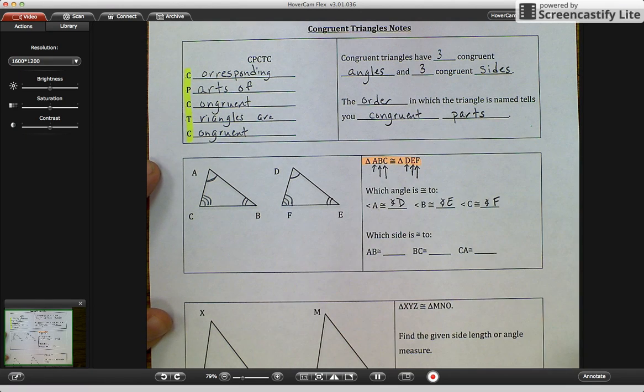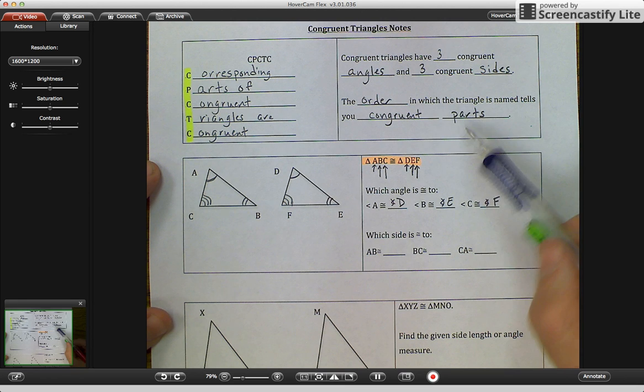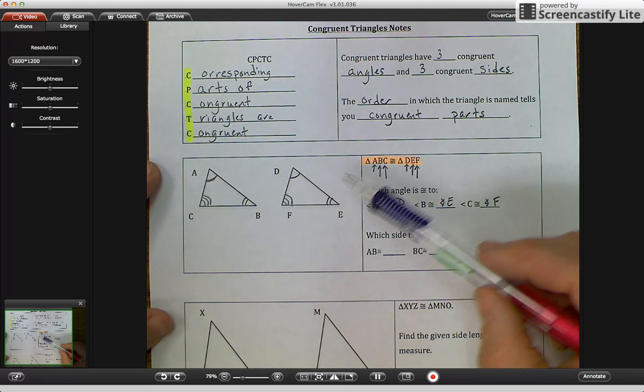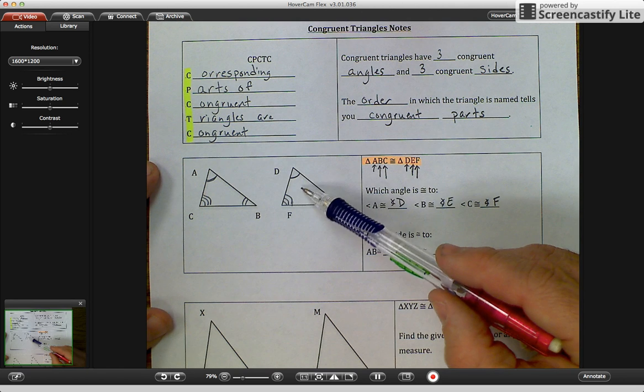And that's how you can tell which parts are congruent, because sometimes they aren't as obvious as these two triangles.